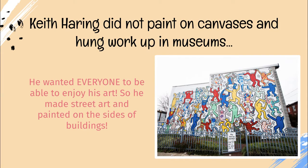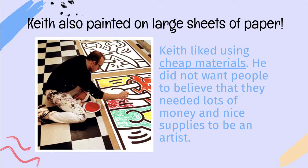Keith Haring did not paint on canvases, and often his work was not hung in museums. He wanted everyone to be able to enjoy his art, so he made street art and painted on the sides of buildings. He also painted on large, cheap sheets of paper. Keith liked using cheap materials — he did not want people to believe they needed lots of money and nice supplies to be an artist.